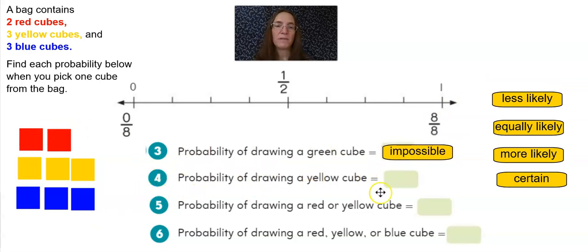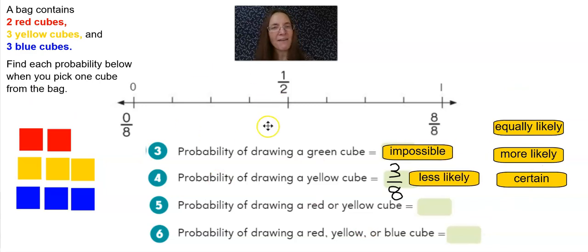What's the probability of drawing a yellow cube using fractions? Well, there are eight total cubes, and three of them are yellow. So we can say there's a three eighths possibility of drawing a yellow cube. If I were to unite that with some words, we can now mathematically say that it's less likely. It's not past the halfway mark. Three eighths is right here.